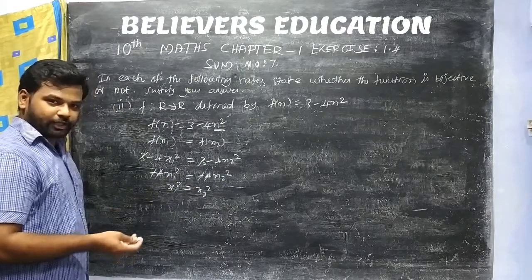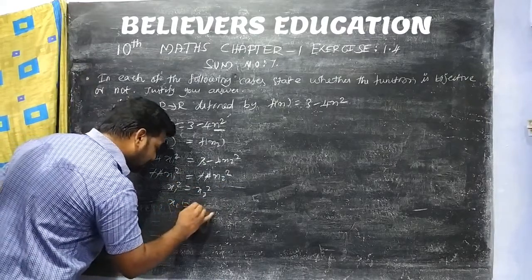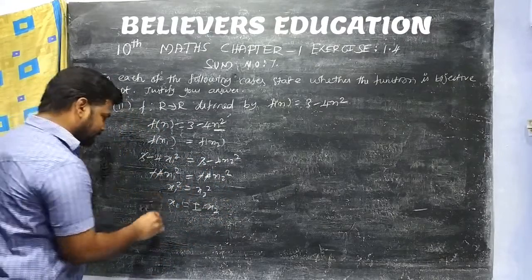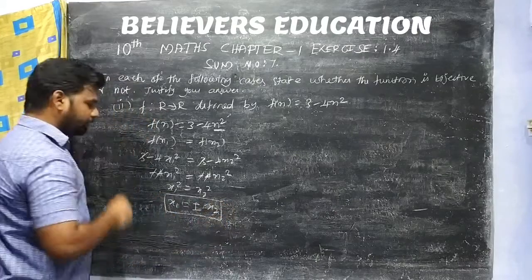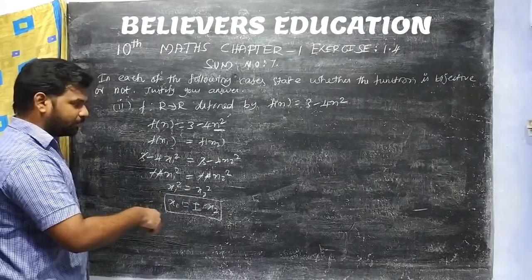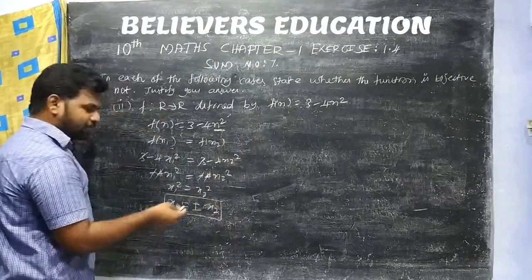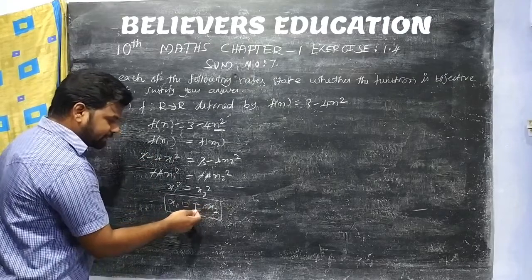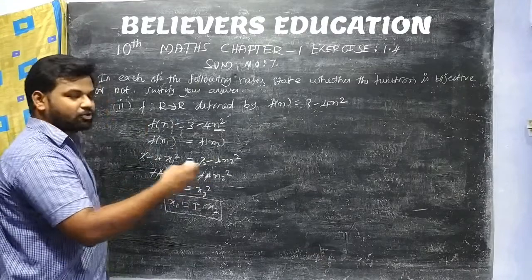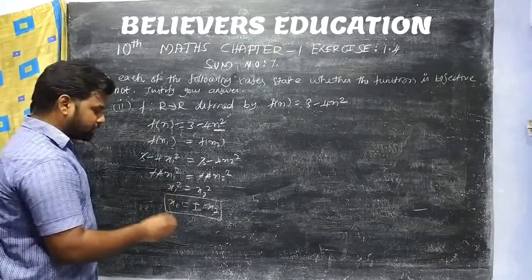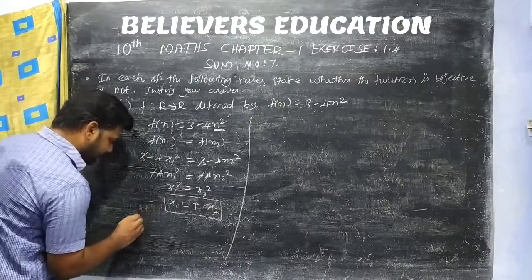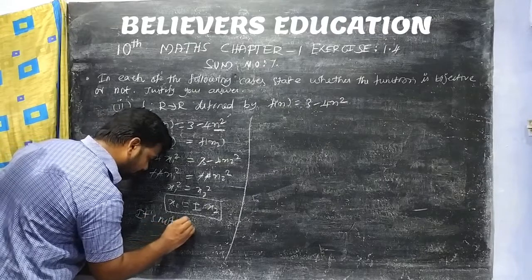Taking square roots on both sides, x1 is equal to plus or minus x2. That is, x1 can equal x2 or x1 can equal minus x2. If x1 equals minus x2, then x1 and x2 are not necessarily equal, so it does not satisfy the one-to-one condition. It is not a one-to-one function.